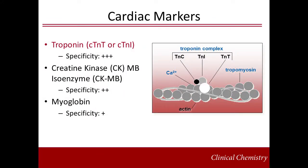The cardiac troponin complex consists of three regulatory proteins — troponin C, I, and T — that control the calcium-mediated interaction of actin and myosin. Troponin C exhibits no cardiac specificity and therefore cannot be used as a biomarker of necrosis. Both troponin I and T have cytosolic and structural pools, with most existing in the structural pool.